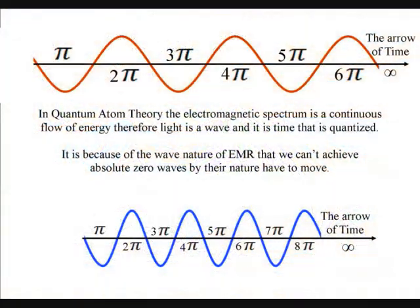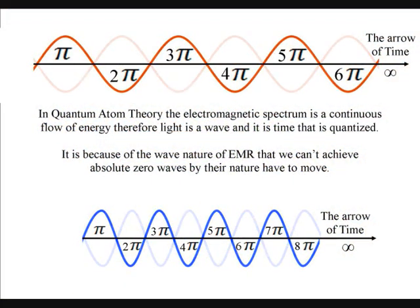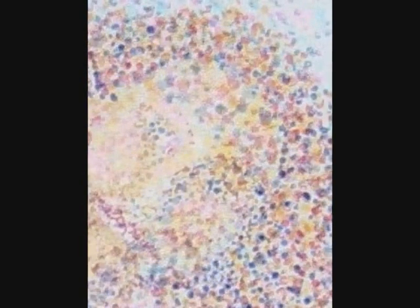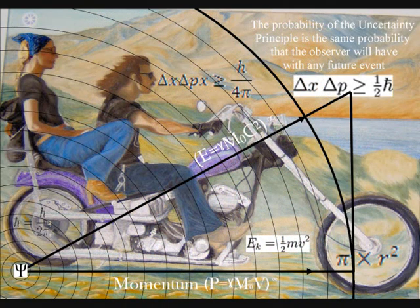Because waves by their nature have to move, we cannot achieve absolute zero and all atoms radiate light or electromagnetic radiation continuously. Even the individual atoms of the observer are radiating electromagnetic radiation forming their own space-time geometry in unison relative to their position and momentum.